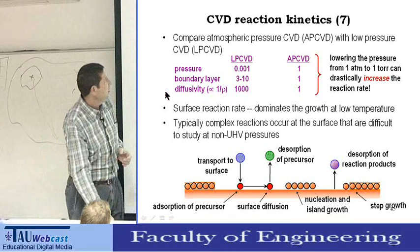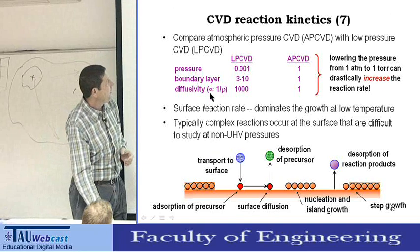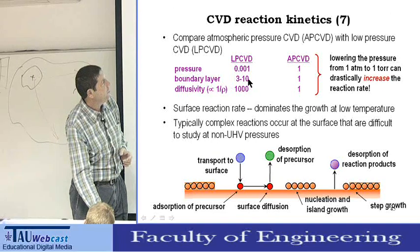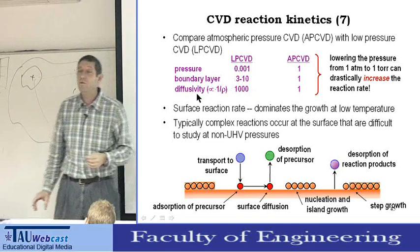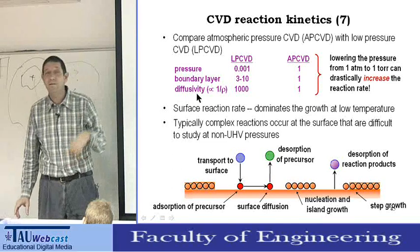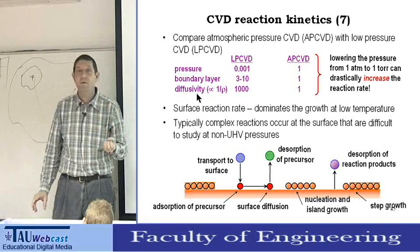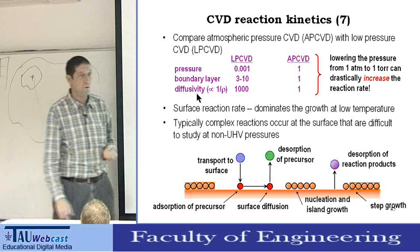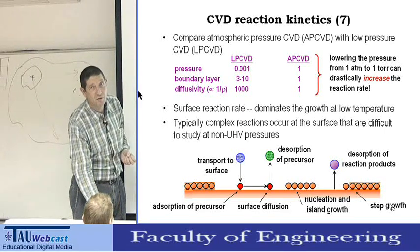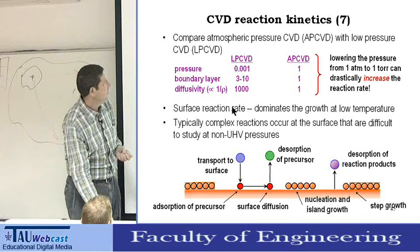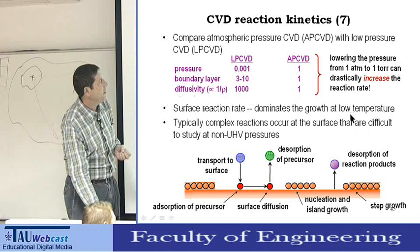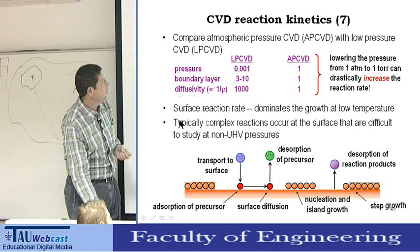If you look at the boundary layer, it is about three to ten times thicker, but the diffusivity is a thousandth times faster. So because the diffusivity is a thousandth times faster, we get the surface reaction that dominates the growth at low temperature.